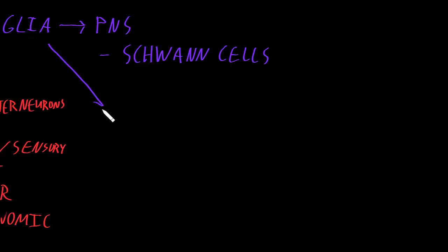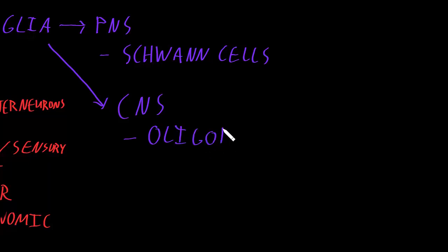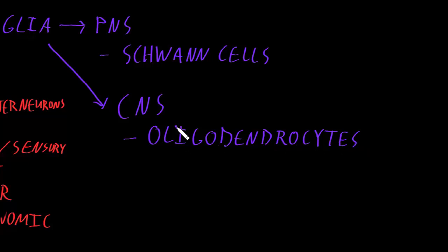In the central nervous system, there's another cell that does the same thing — called oligodendrocytes. Oligodendrocytes and Schwann cells, for the most part, perform the same function of wrapping myelin around the axons of some neurons. But Schwann cells do this in the peripheral nervous system, and oligodendrocytes do this in the central nervous system.